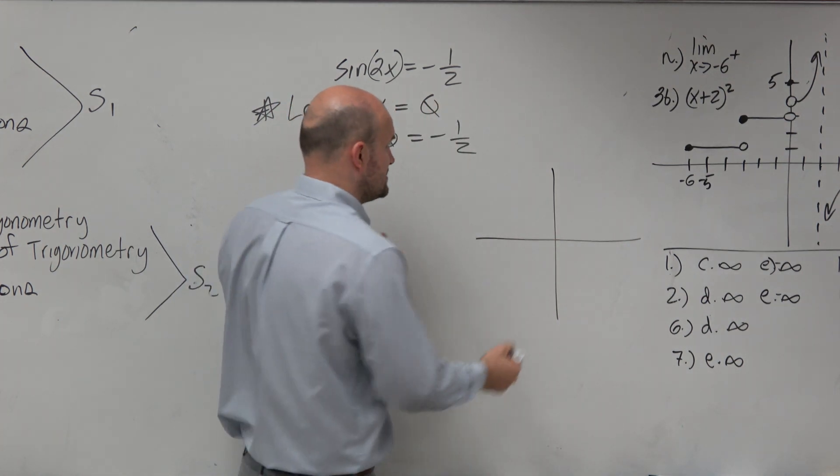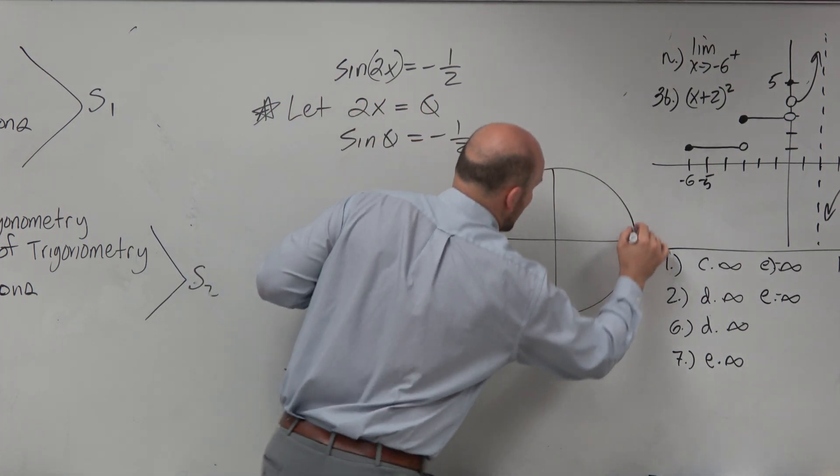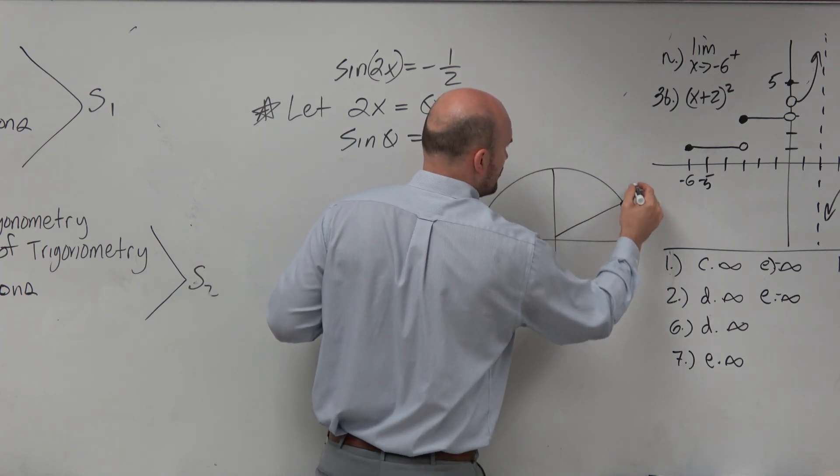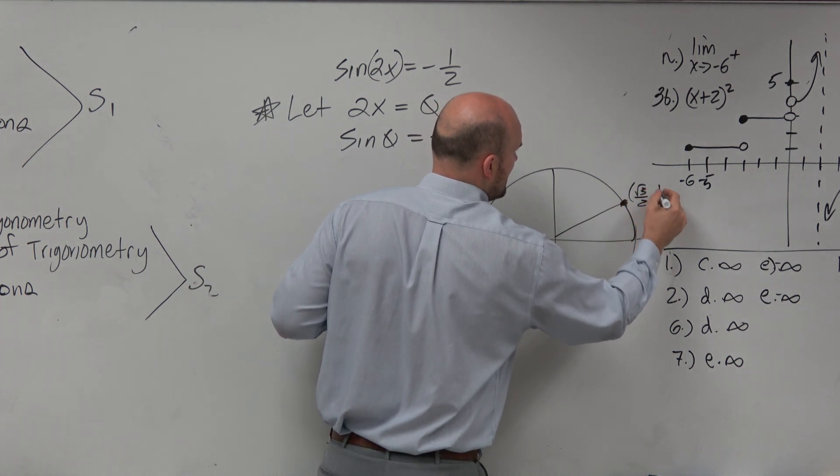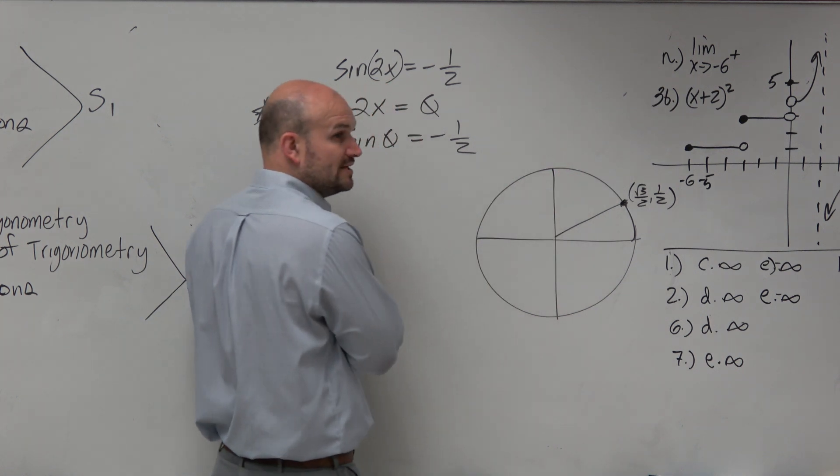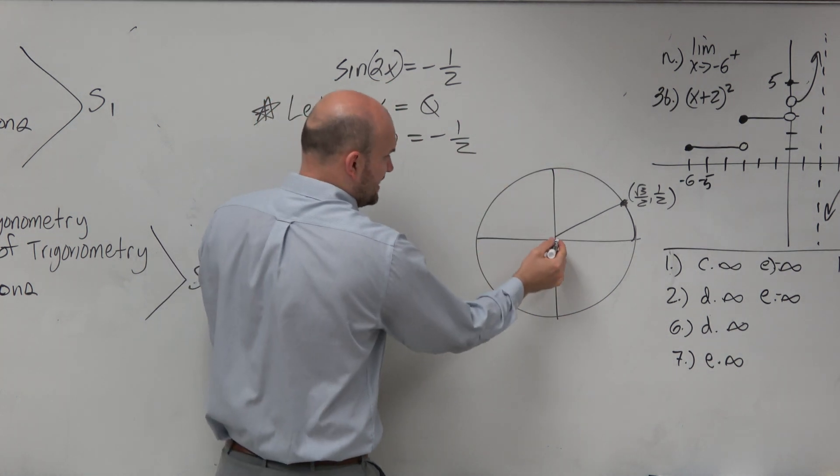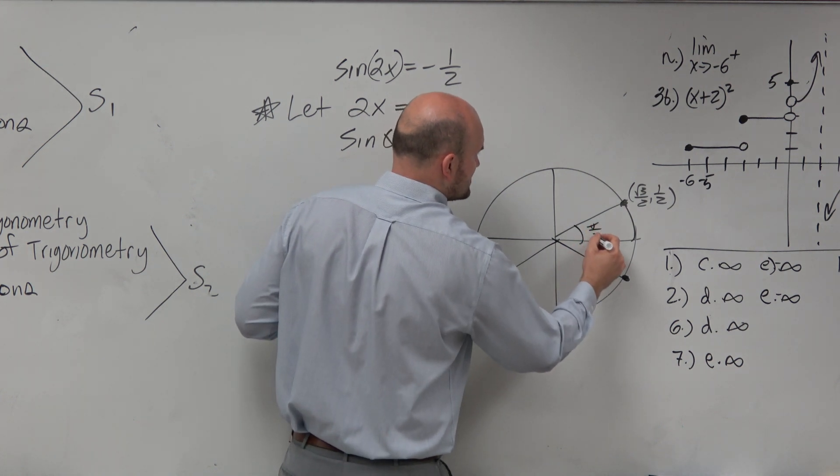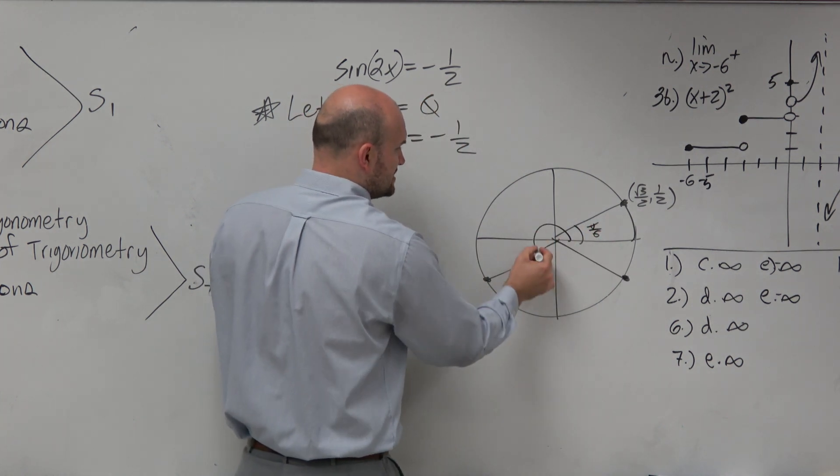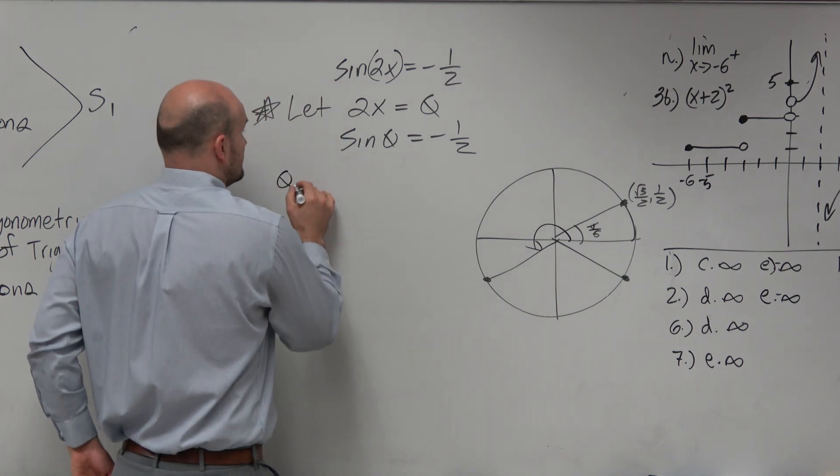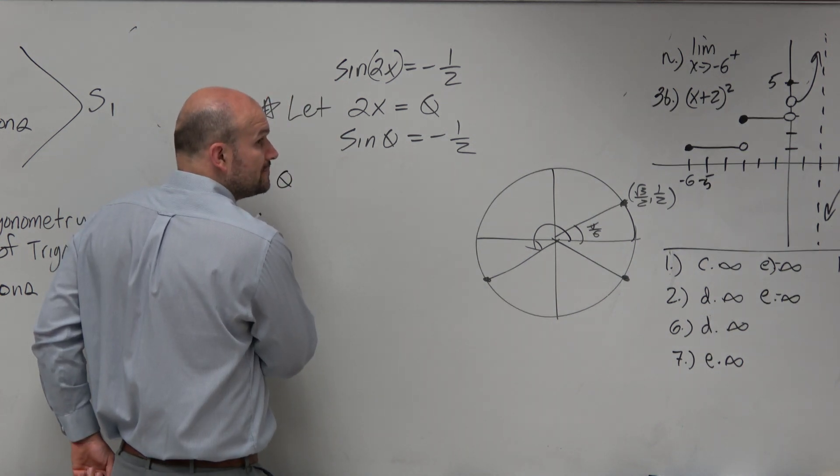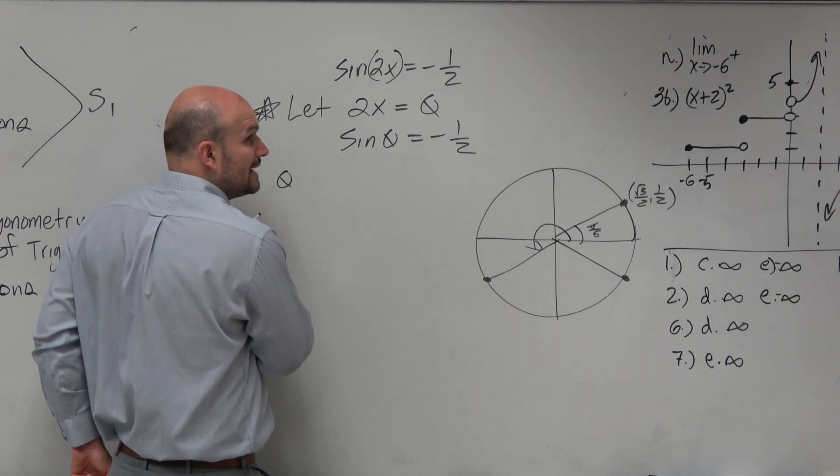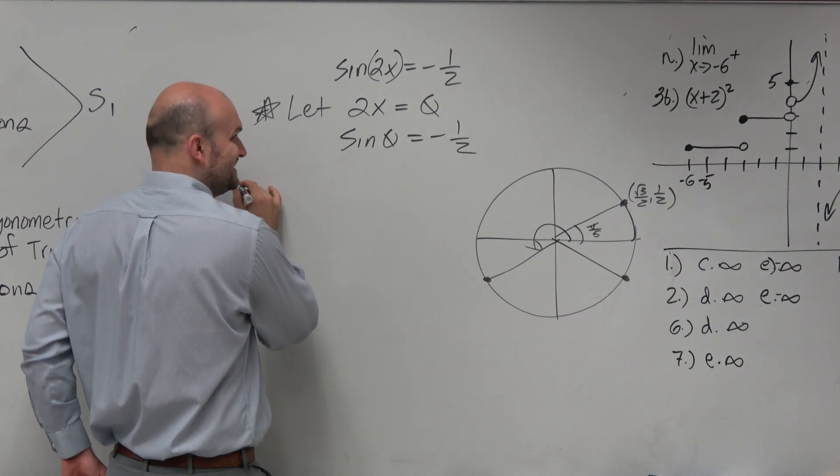So remember, sine is the y-coordinate. Negative 1 half has, if you remember, this coordinate point is square root of 3 over 2 comma 1 half. So that's when the y-coordinate is 1 half. But we need to be at negative, so it needs to be down here. Same reference angle as pi over 6. So that means the angle needs to be? Sine is y. Sine is the y-coordinate. Right? Yes?